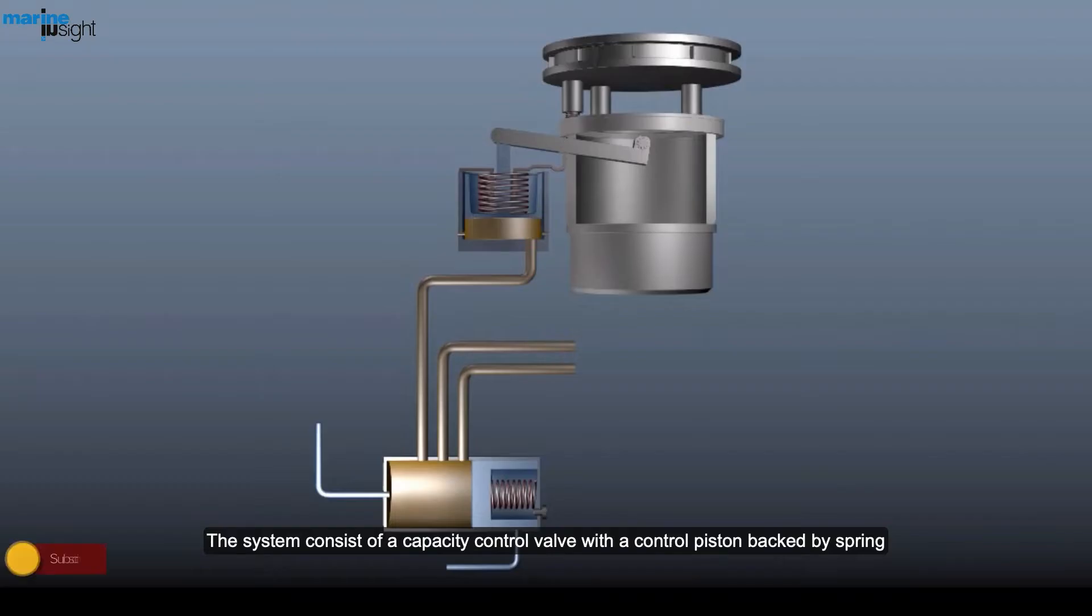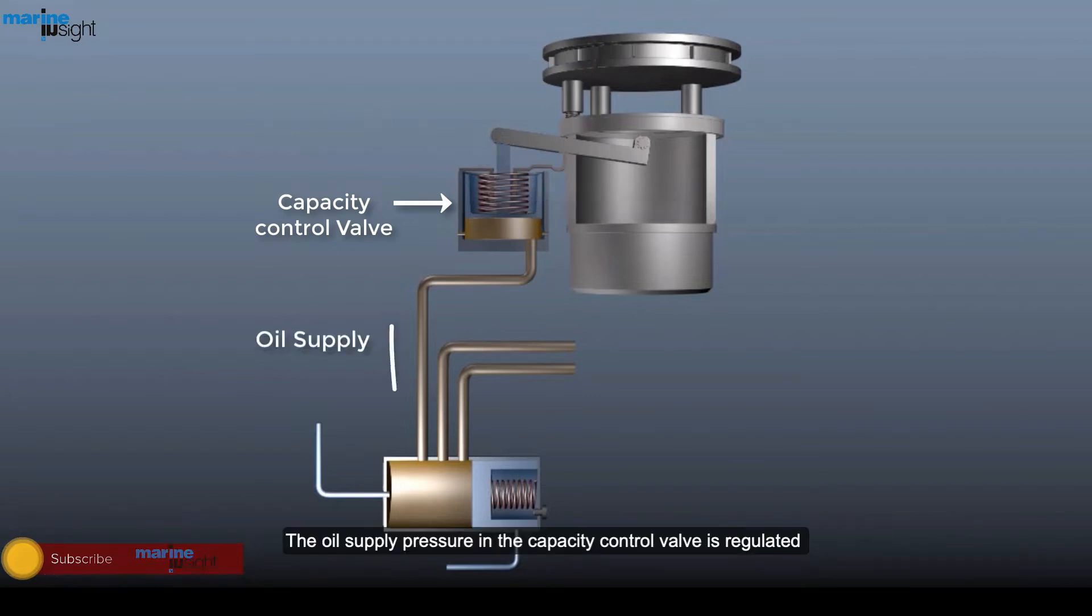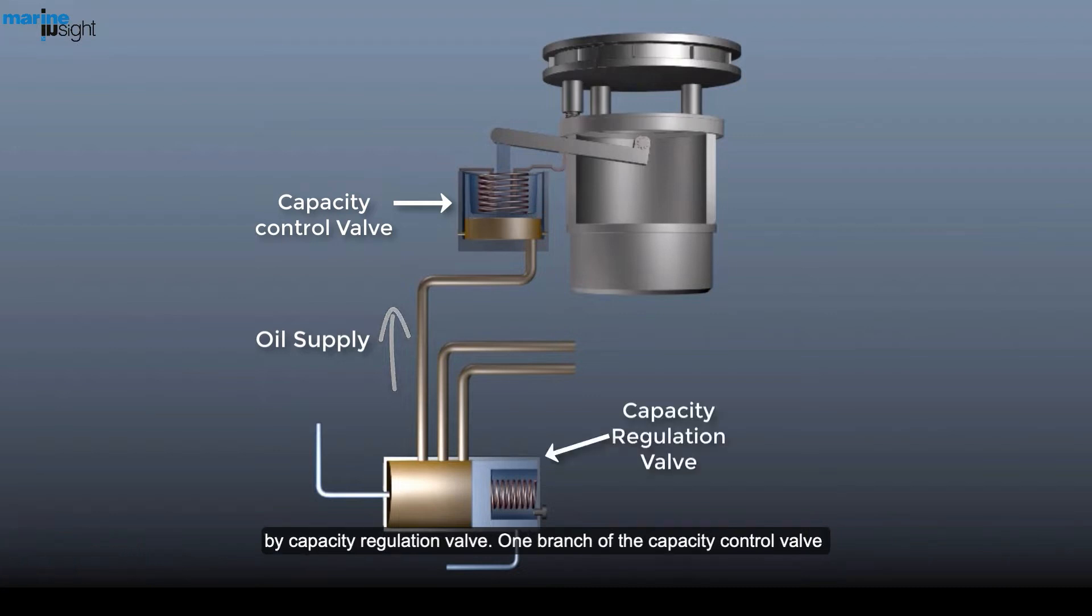The system consists of a capacity control valve with a control piston backed by spring. The oil supply pressure in the capacity control valve is regulated by a capacity regulation valve.